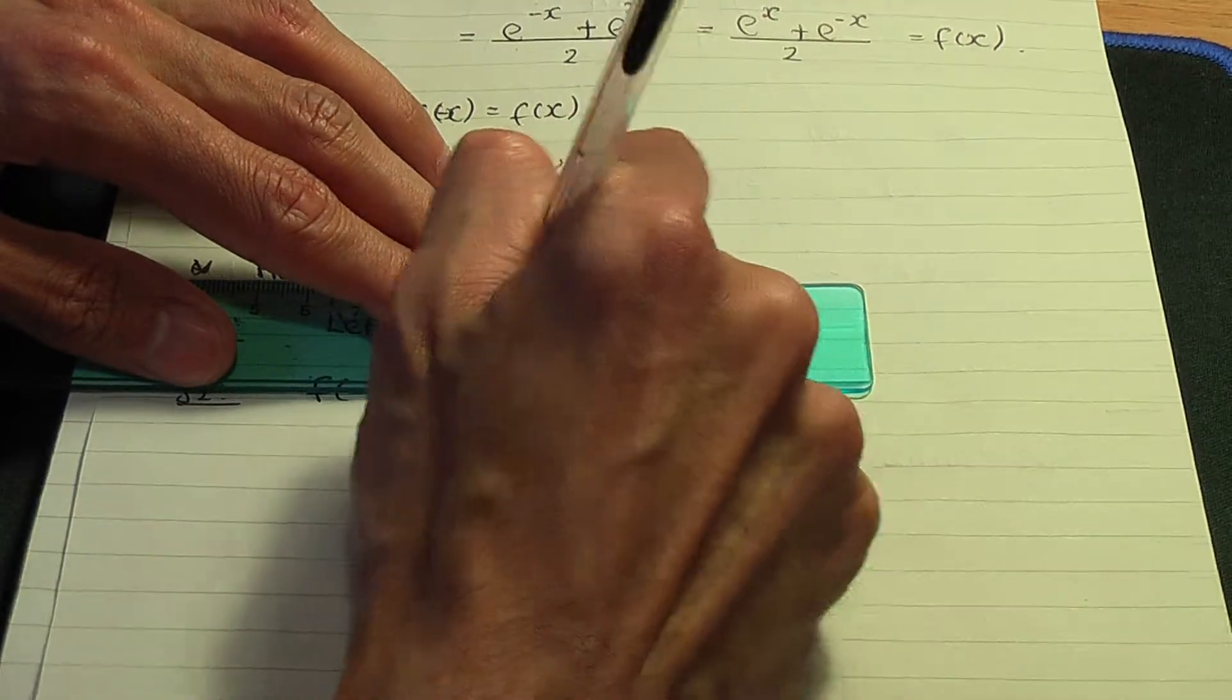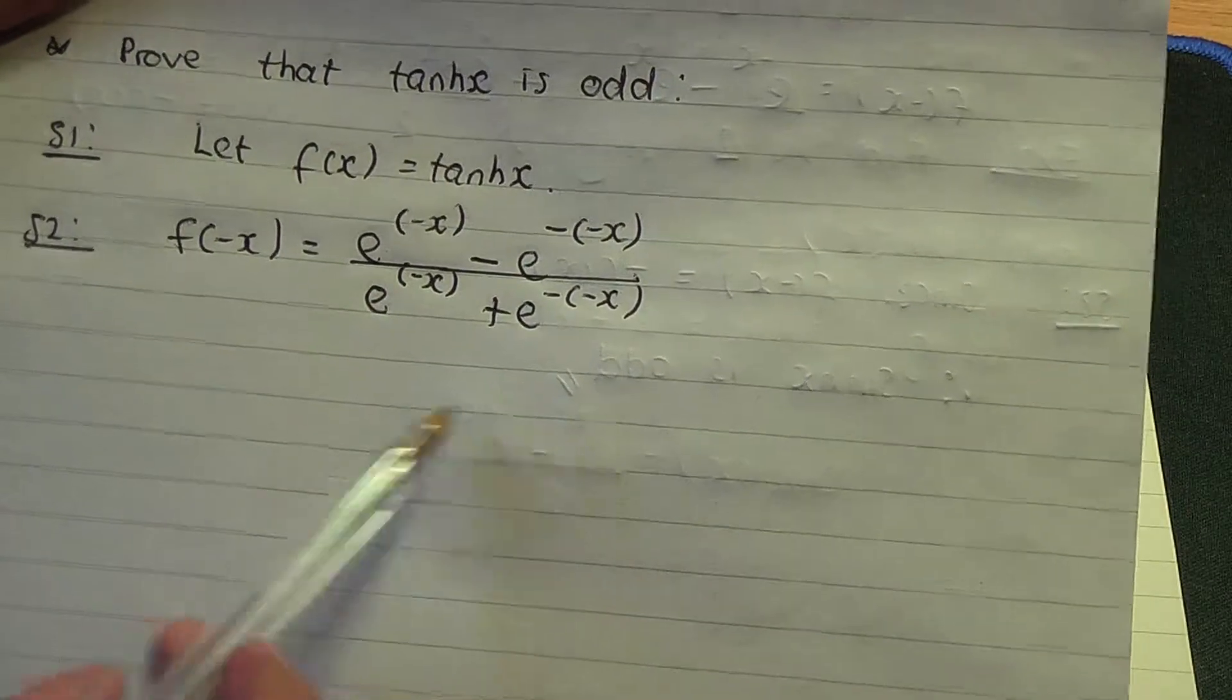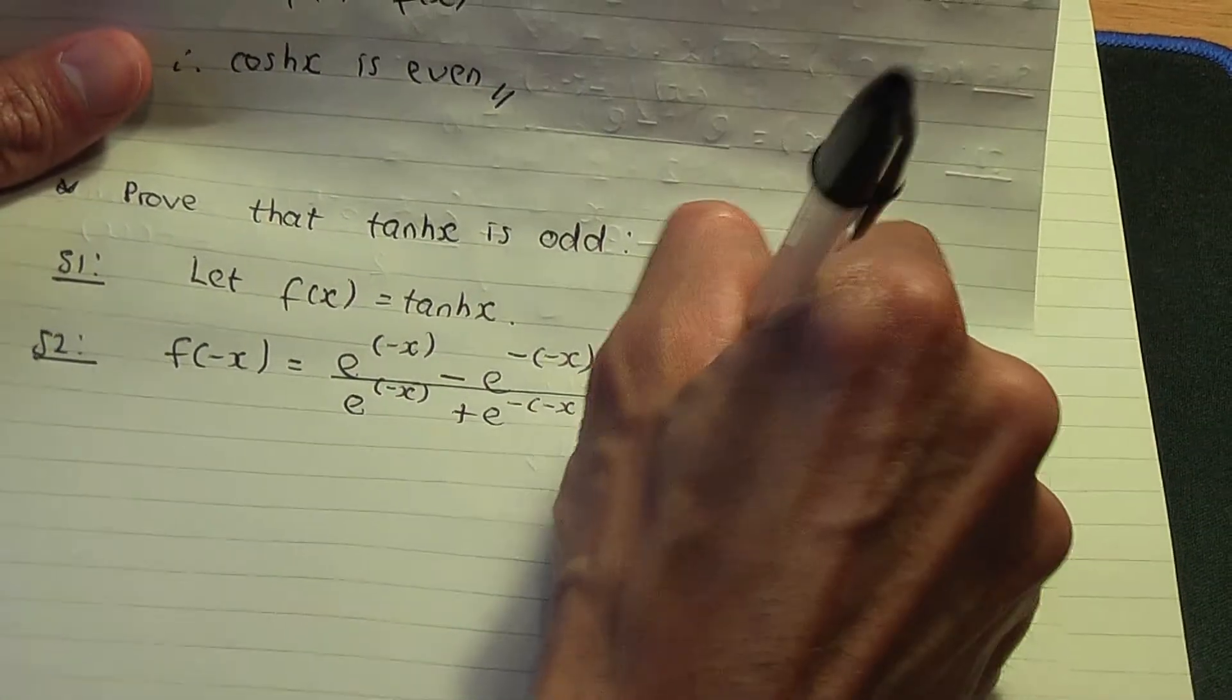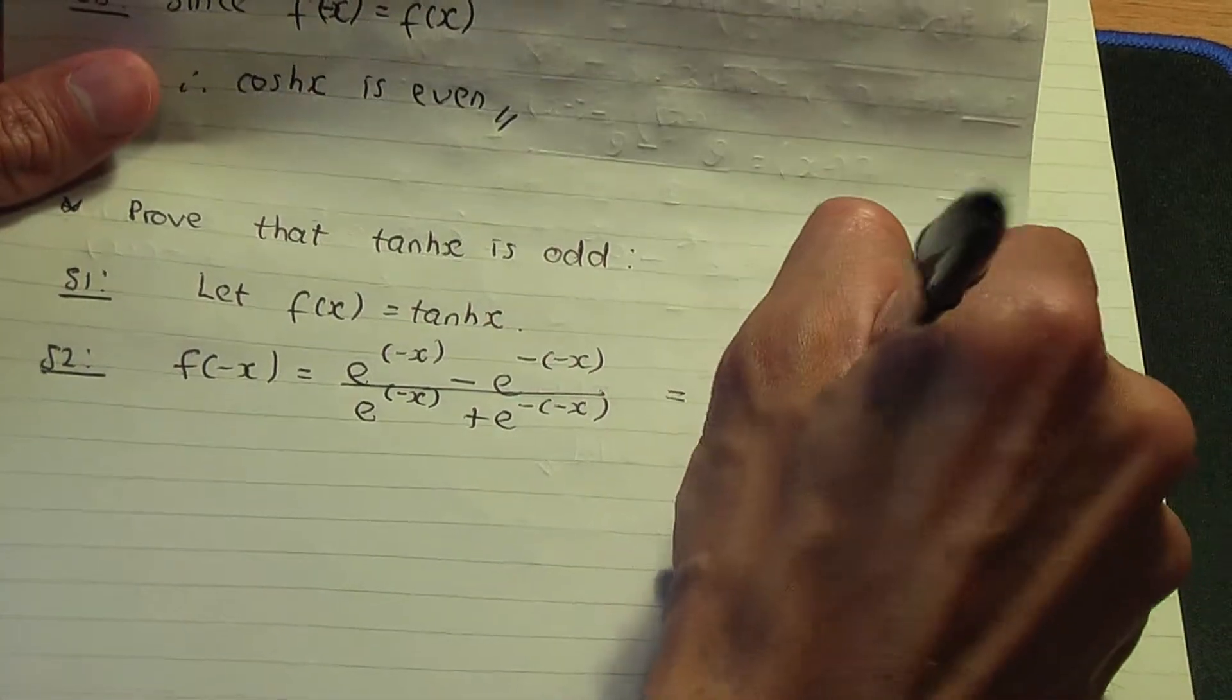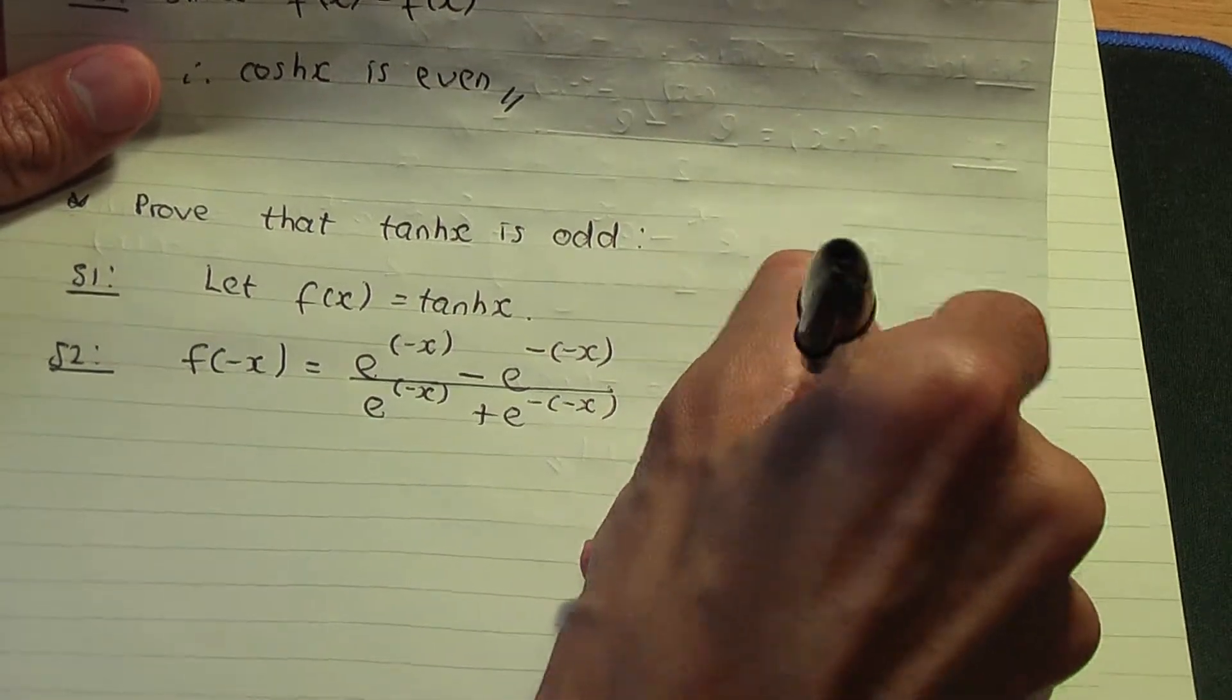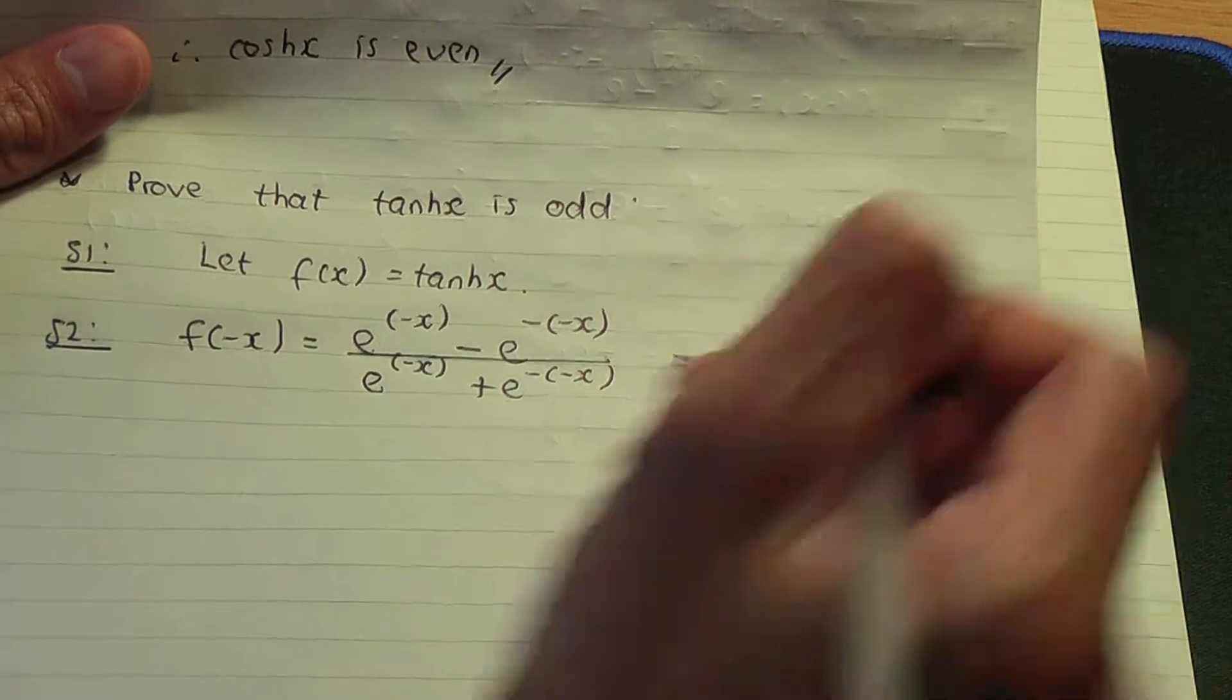Now let's get rid of the brackets and see what we're going to end up with. We're going to end up with e^(-x) minus e to the power - these two minuses will become a plus - divided by e^(-x) plus e to the power, and these two minuses also equate to a plus.